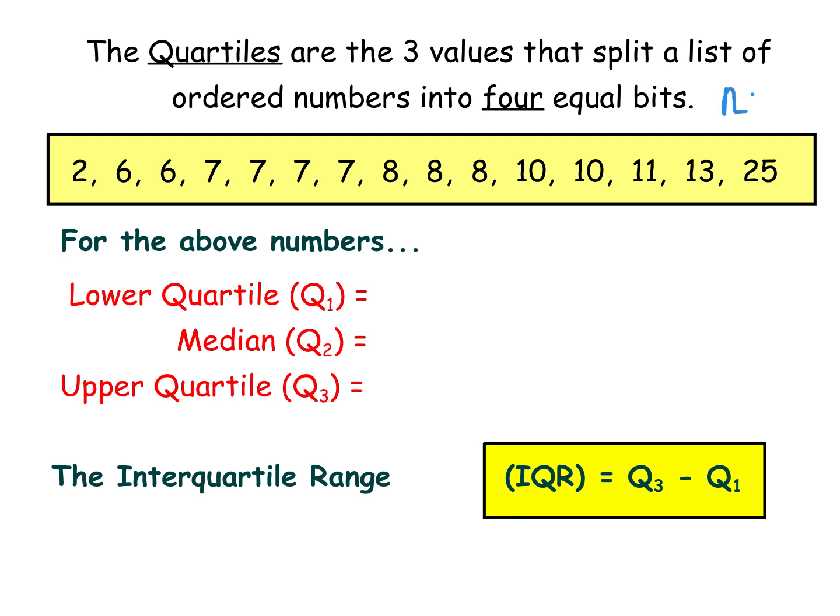If you have got 15 numbers or 15 people in a class and you were to split it into two groups, you would have 7, 7 and a wee person left over. So I'm going to count in seven numbers. So I'm going to go 1, 2, 3, 4, 5, 6, 7. There's my middle number. And just to check, I've got seven either side, 1, 2, 3, 4, 5, 6, 7. So there is the middle.